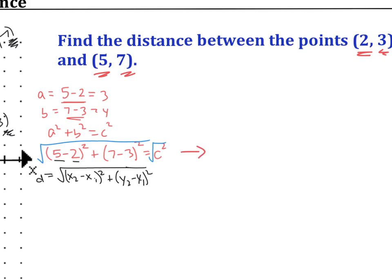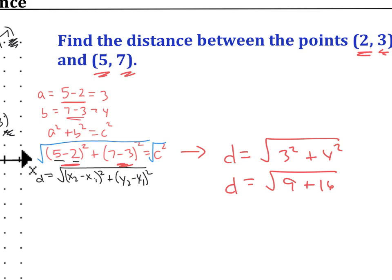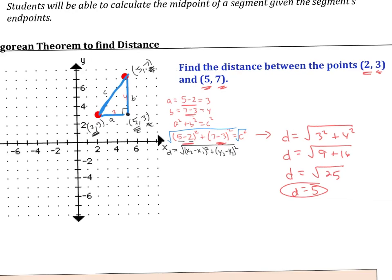To finish the problem, our distance equals the square root of (5 minus 2) squared plus (7 minus 3) squared, which is the square root of 3 squared plus 4 squared, or the square root of 9 plus 16. Following order of operations — square first, then add — we get the square root of 25, and the distance is 5.